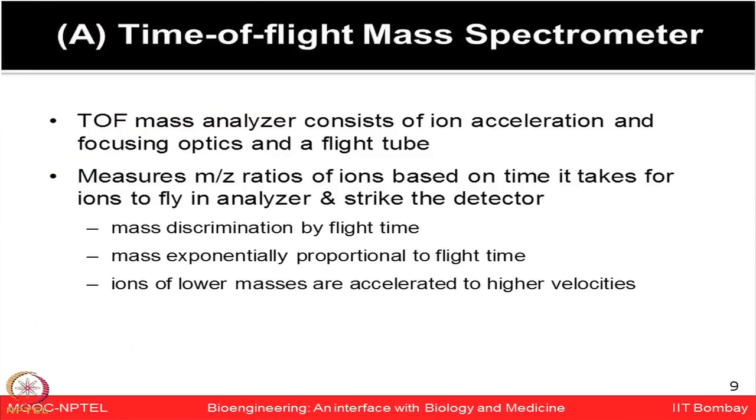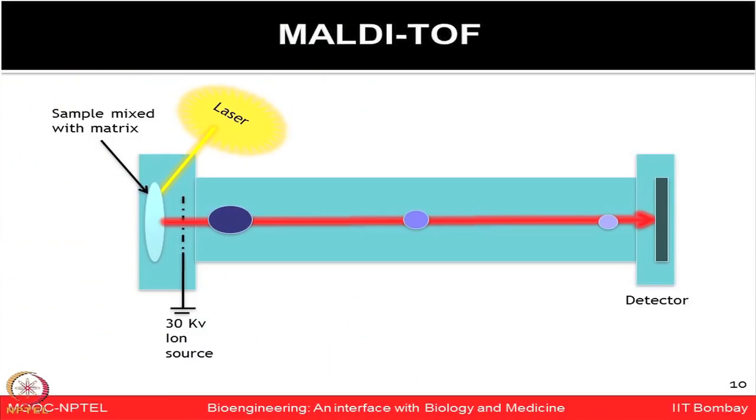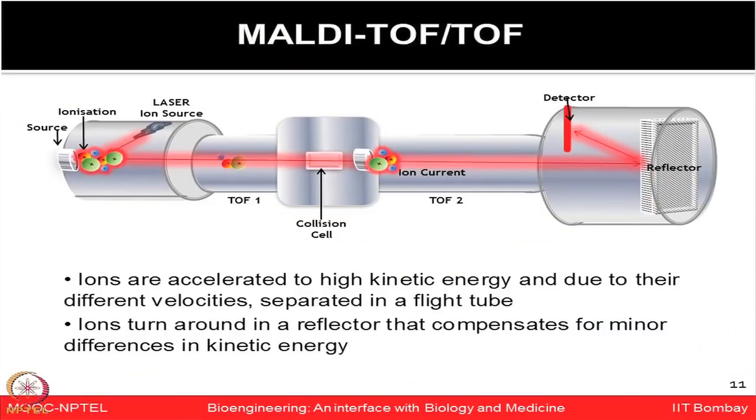The TOF mass analyzer consists of ion acceleration and focusing optics inside a flight tube. It measures the mass-to-charge ratio based on how long it takes for ions to fly inside the analyzer and strike the detector — mass discrimination based on flight time, with mass exponentially proportional to flight time. Ions of lower mass are accelerated to higher velocities. If you have two TOF tubes, that is a hybrid TOF-TOF configuration.